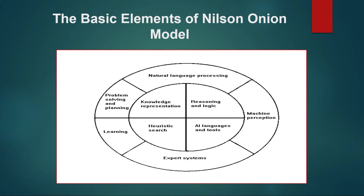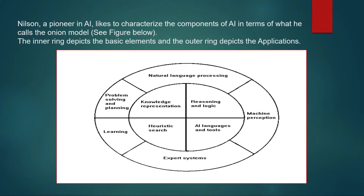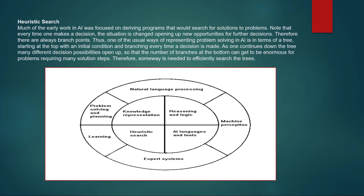The inner ring represents the basic elements whereas the outer ring depicts the application areas of artificial intelligence. To start with the inner ring, we have heuristic search. This is the most common term used in AI. Most of the AI work was focused on deriving programs for searching solutions to problems. To search for a solution we have to make decisions, and the situation changes, opening up new opportunities for further decisions.